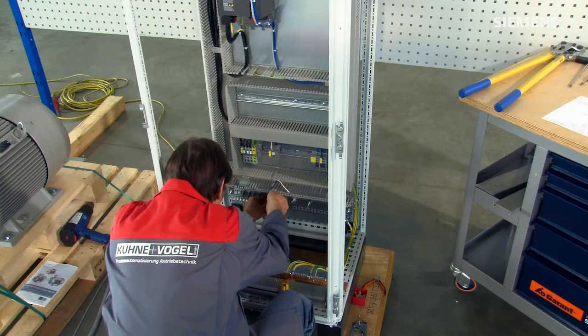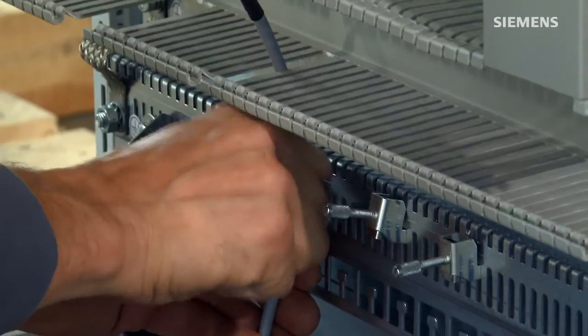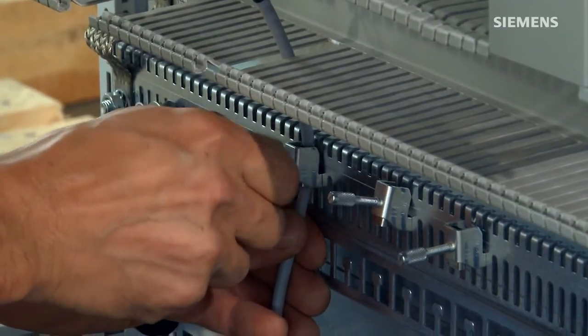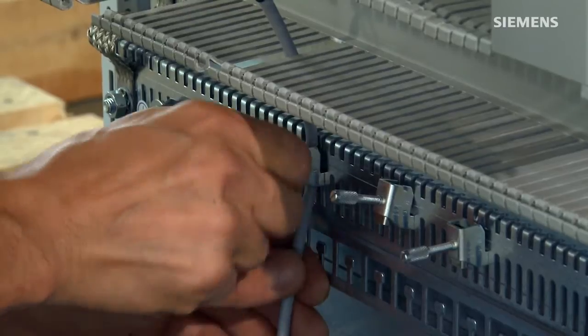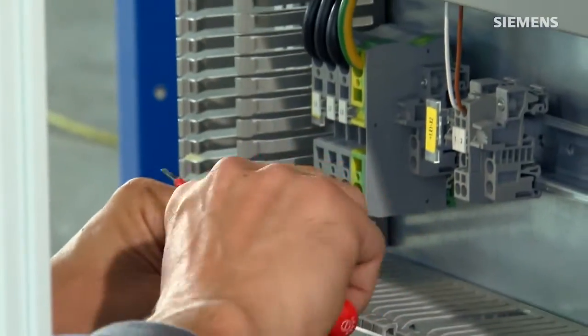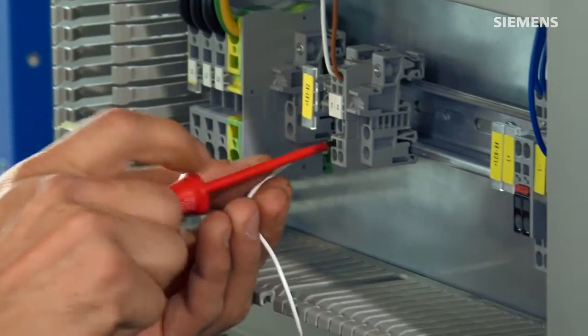Using a bolt clamp, place the cable on the EMC rail and tighten the clamp. Strip the cable and attach it to the terminal strip provided for this purpose.